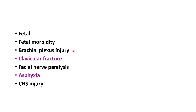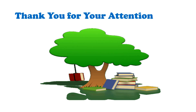Fetal complications include fetal hypoxia from prolonged labor, brachial plexus injury from attempts to push the baby out, clavicular fracture, and facial nerve paralysis — the latter from applying traction over the head after its delivery. There is also a chance of central nervous system injury, including spine and brain injury, from pressure applied over the head. These are the complications of shoulder dystocia.